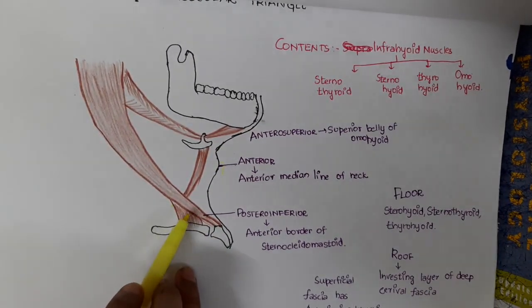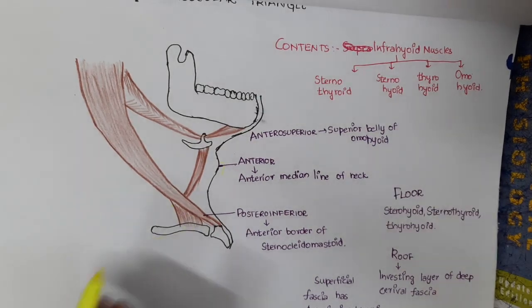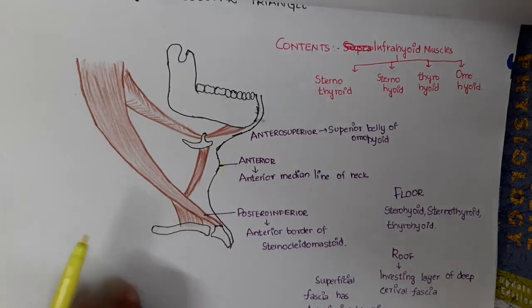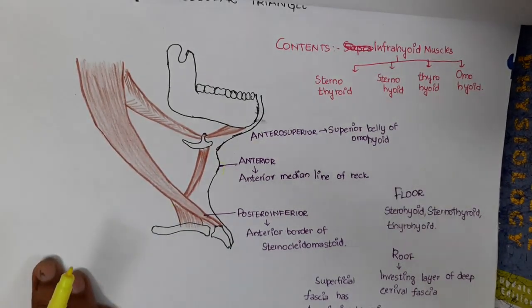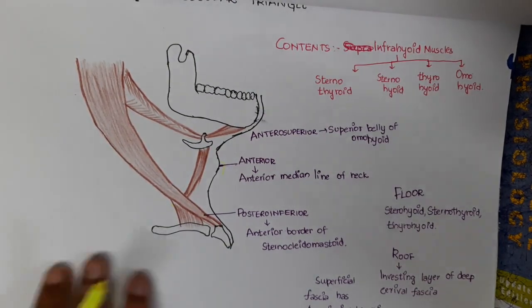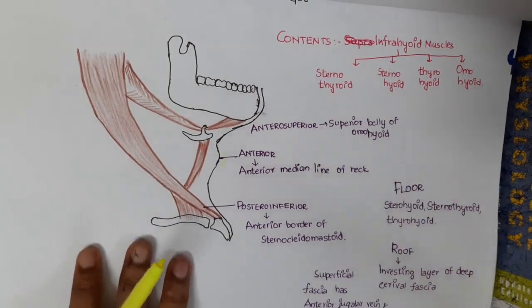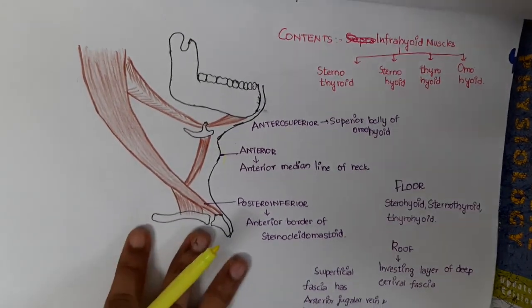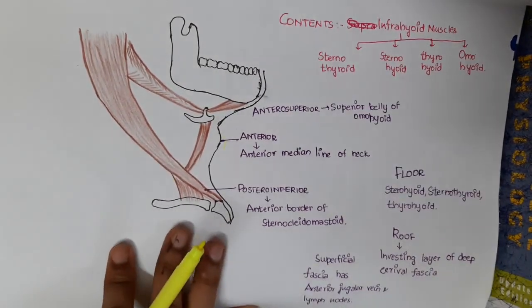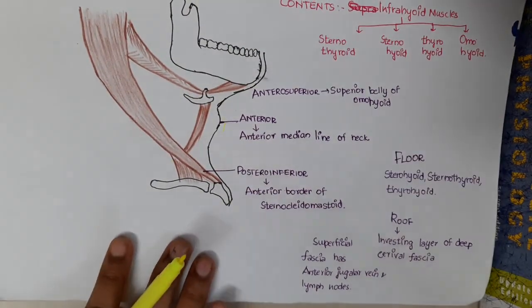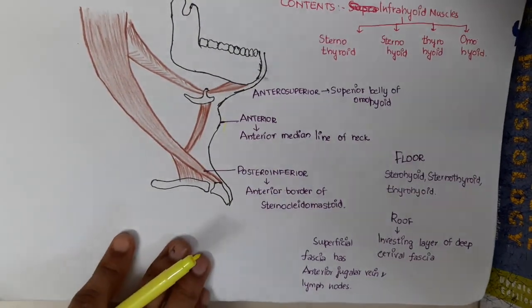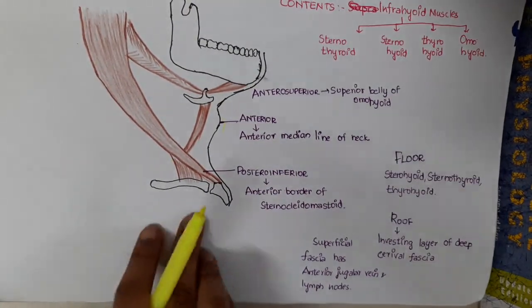The floor is formed by sternohyoid, sternothyroid, and thyrohyoid. The roof is formed by the investing layer of deep cervical fascia.